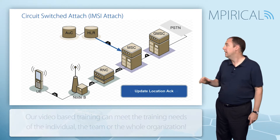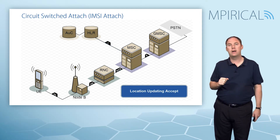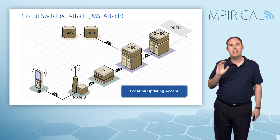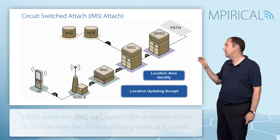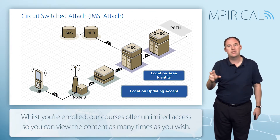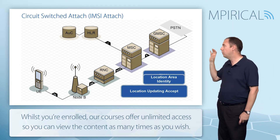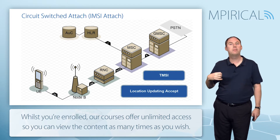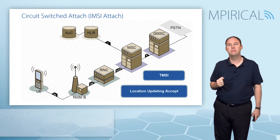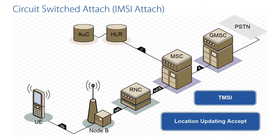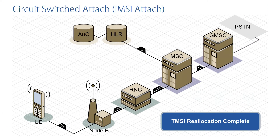The last thing we need to do is signal back to the mobile with a location update accept message, saying yes, you are allowed on the system — in this location area, as confirmation. We can also include the TMSI, which could be a new alias or new identity. Assuming a new TMSI is provided, I would expect a TMSI reallocation complete message to be sent back up to the MSC in acknowledgment.